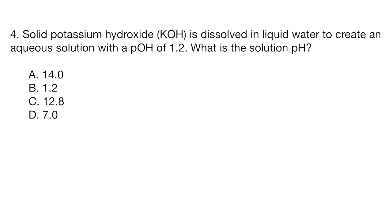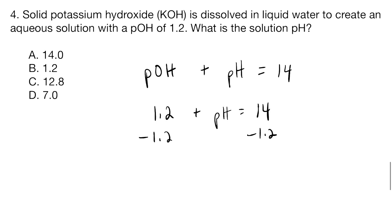So this question is testing our knowledge of pH and pOH. And it turns out that the equation, if you recall, pOH plus the pH equals 14. So since we're given the pOH 1.2, we can just apply the equation and solve for the pH. So in this case, we're going to subtract 1.2. And so our pH comes out to be 12.8. And that is the correct answer.